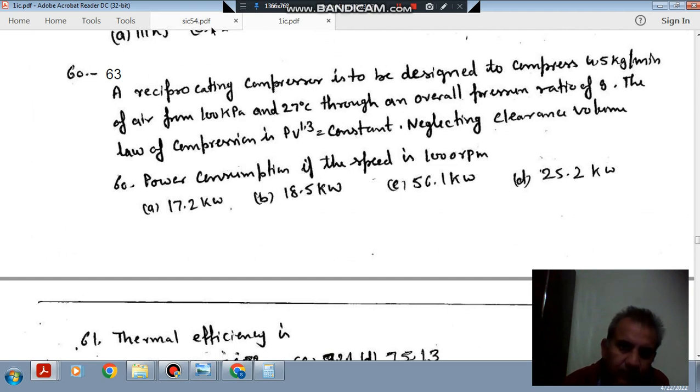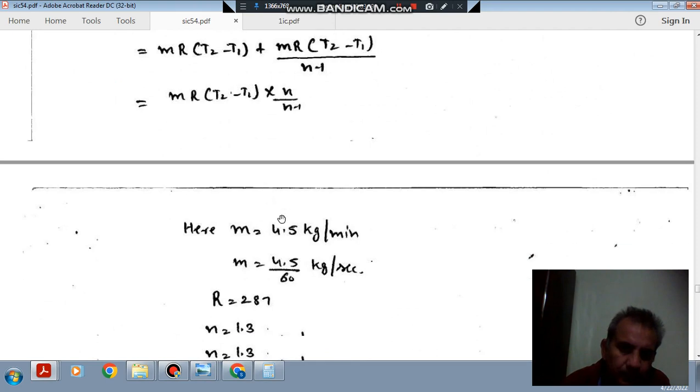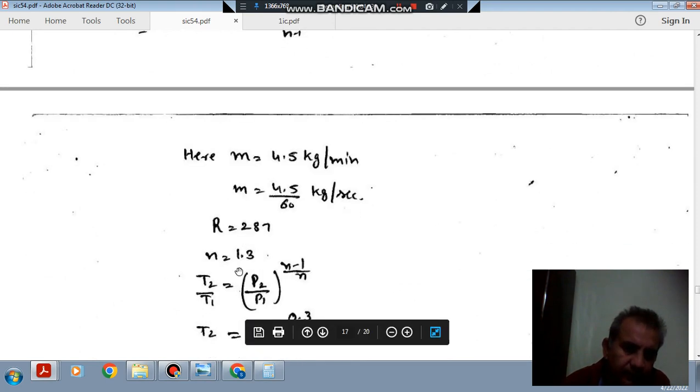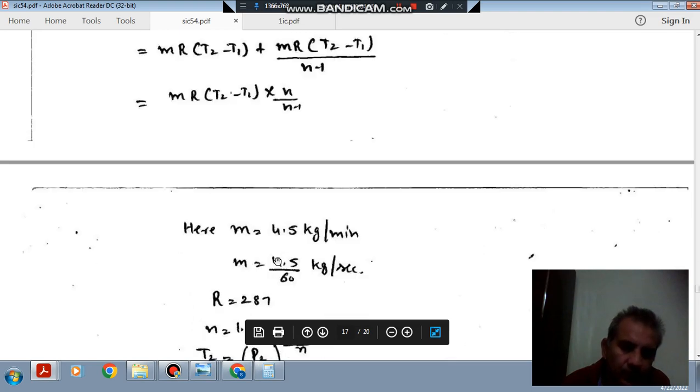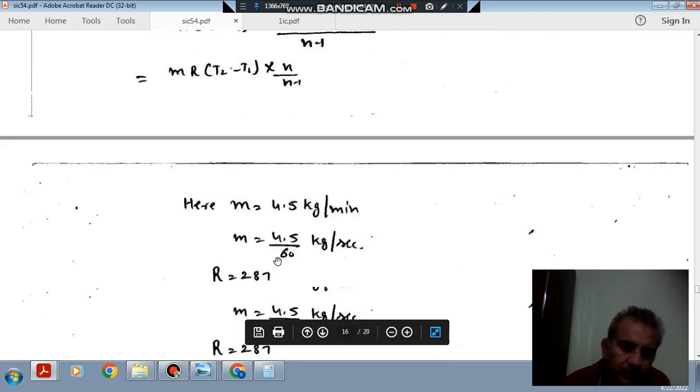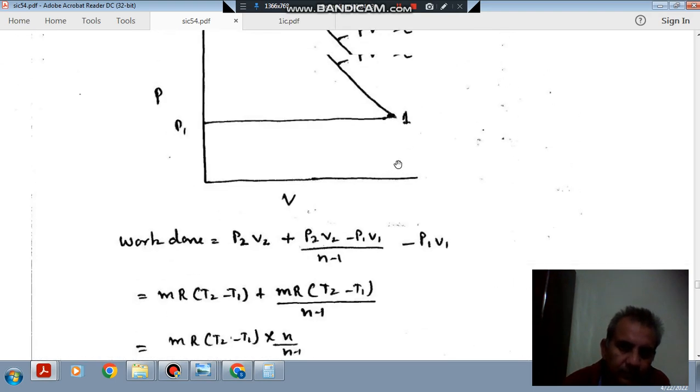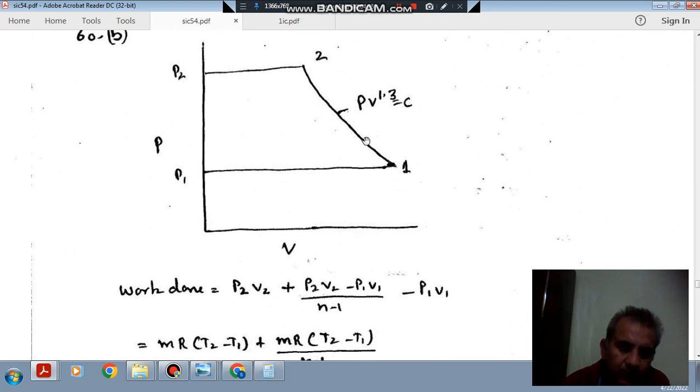Mass of air is 4.5 kg per minute, or in seconds it will be 4.5 by 60. R is 287, N is 1.3, and initial temperature is 27 degrees Celsius or 300 Kelvin. T2 is from the isentropic relation we can find out.